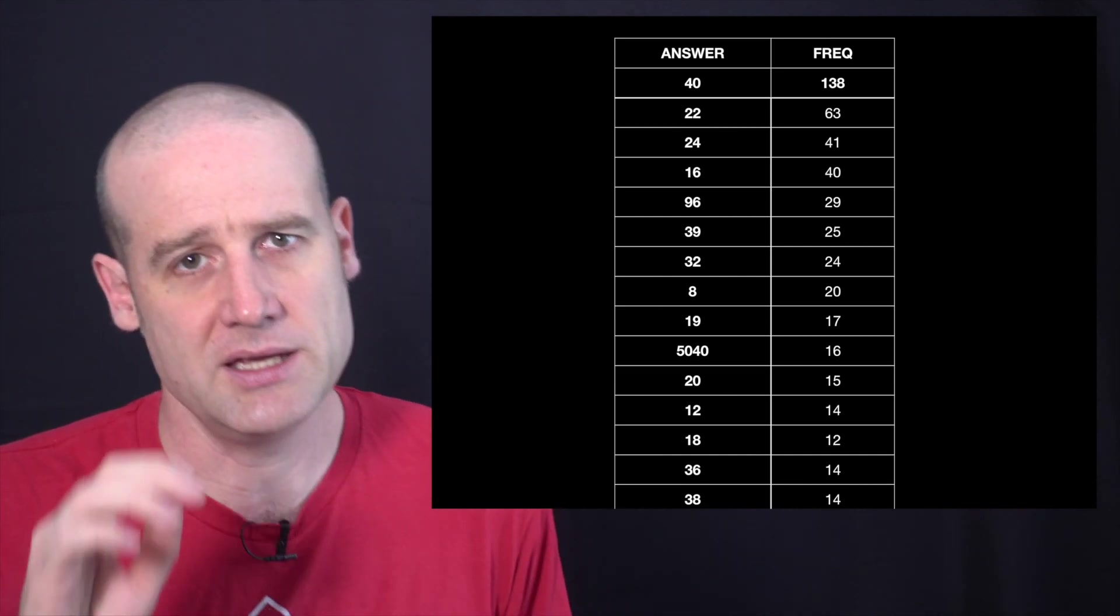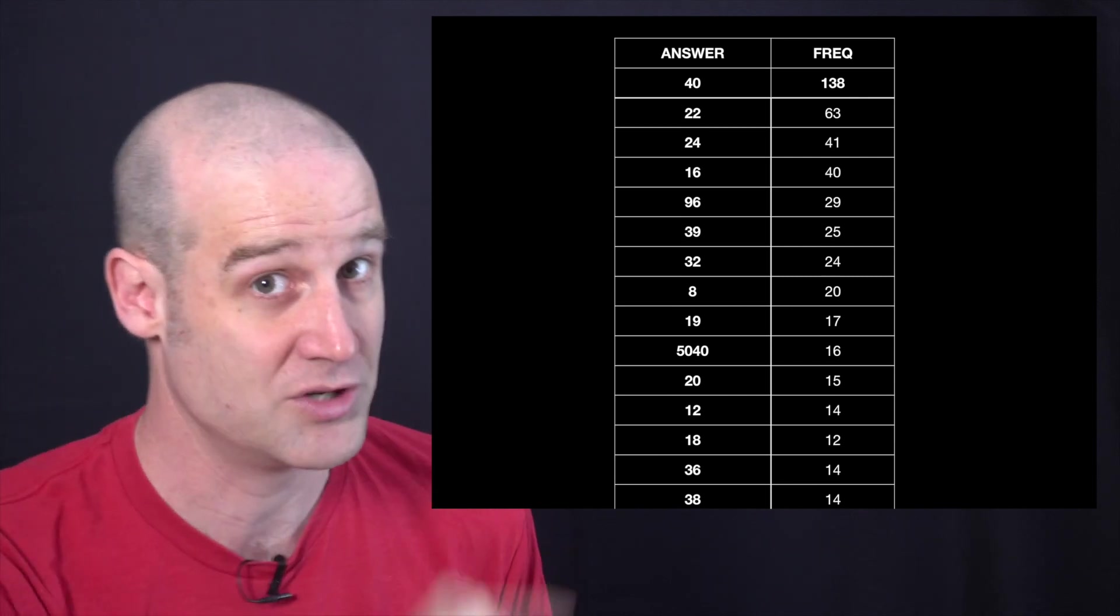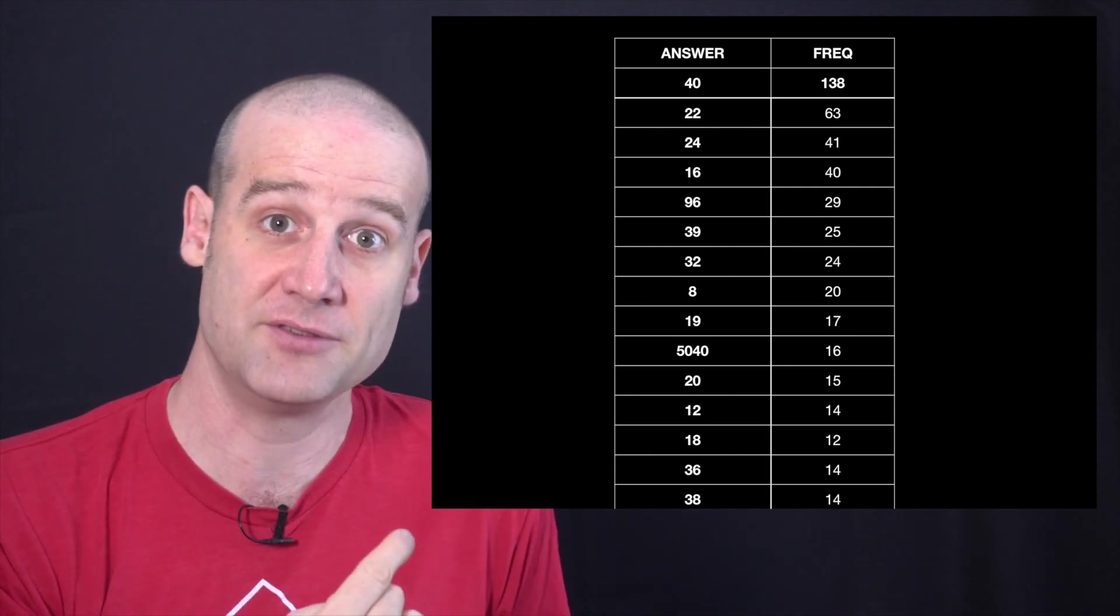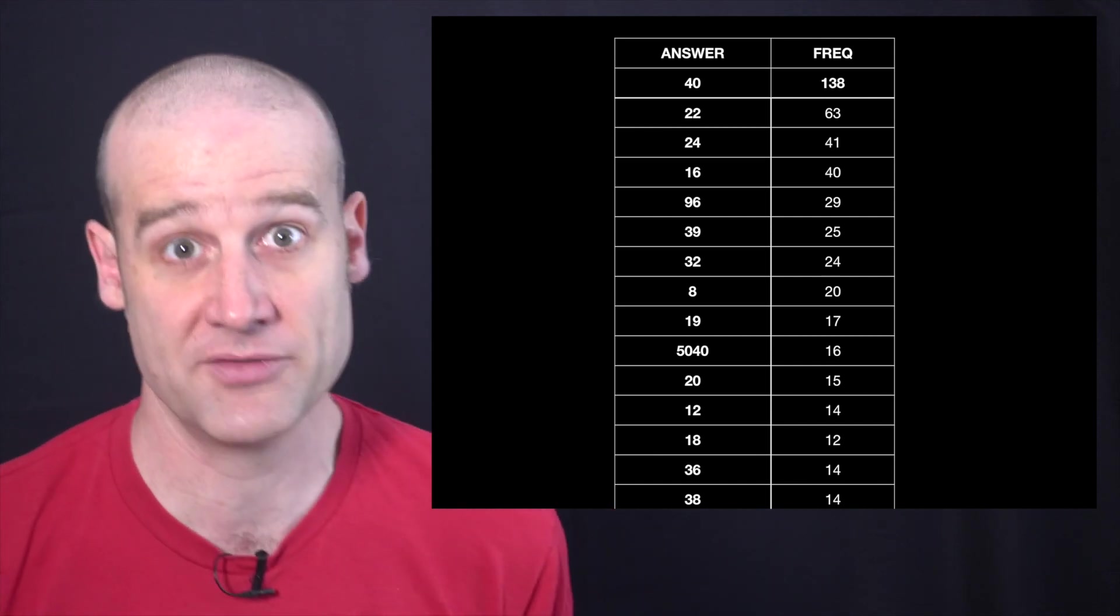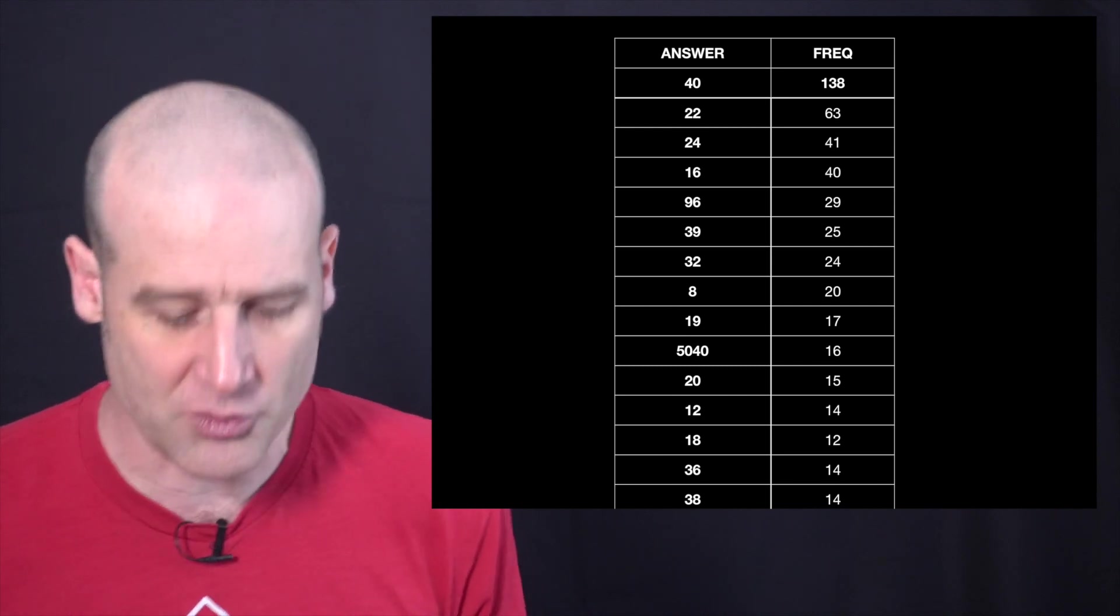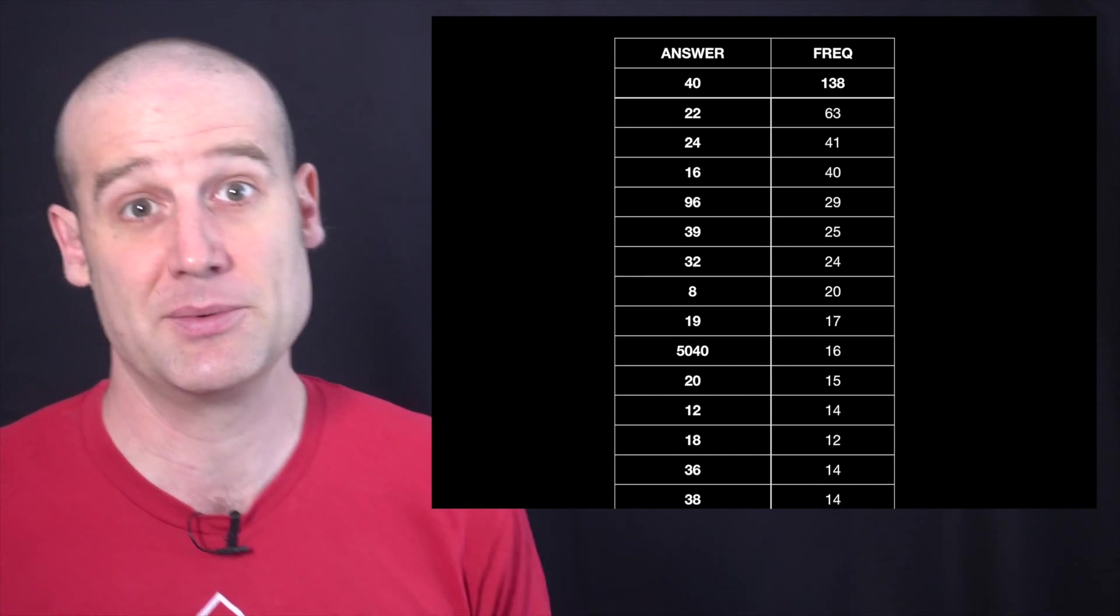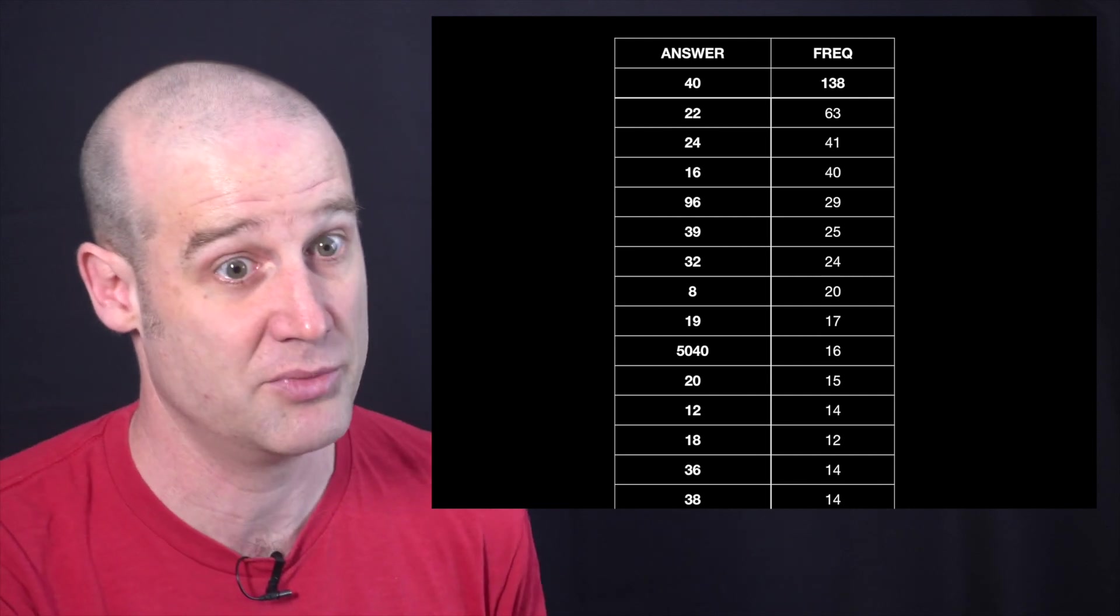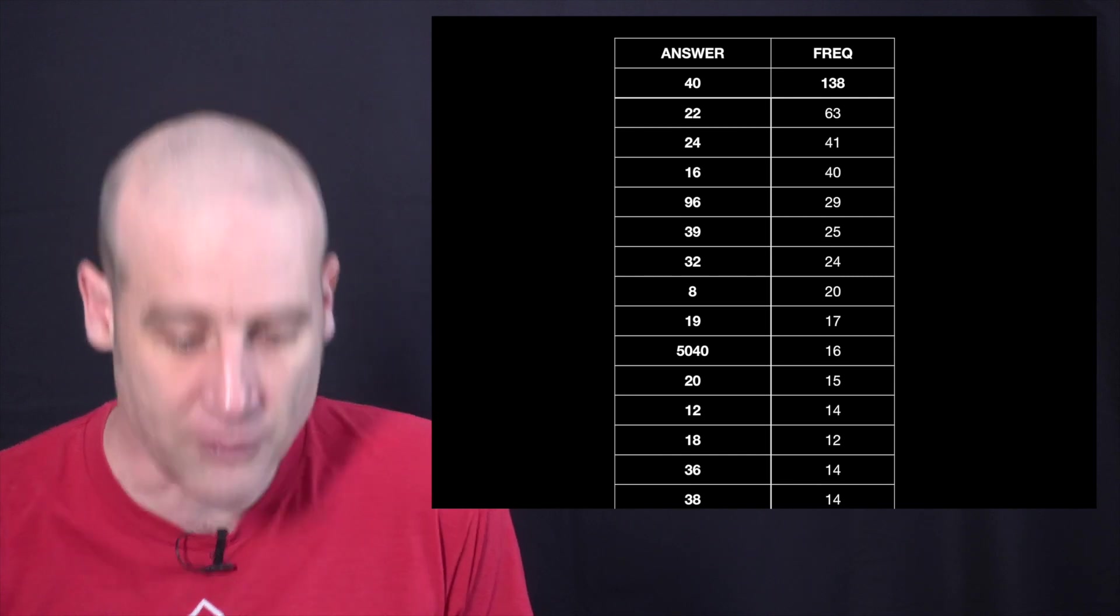So what I've decided to do is you get the full 2000 points if you get the correct answer, which I'll reveal in a moment, you get the 500 participation points if you put in 5040 or any answer less common than that. And I'm just going to use wisdom of the crowds. If you put in an answer which was more common than 5040, which is the baseline for just giving it a go, I assume because lots of people did it, there's some logical reasoning behind it.